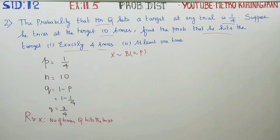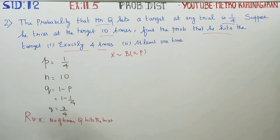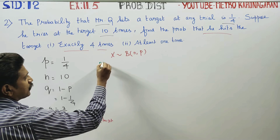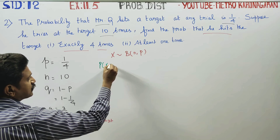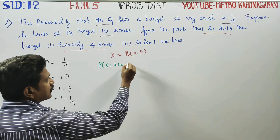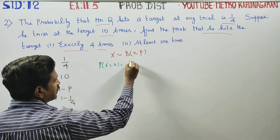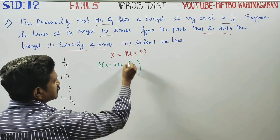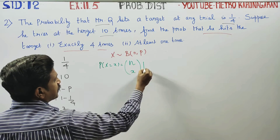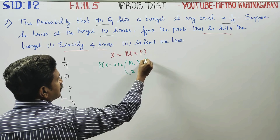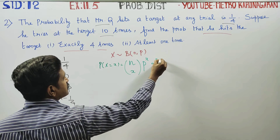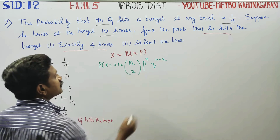This is binomial distribution. The formula is: P(X=x) = nCx times P power x times Q power n minus x. This is your formula.